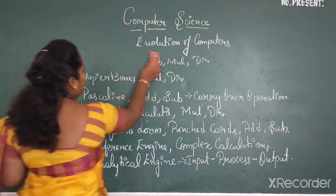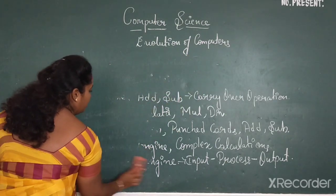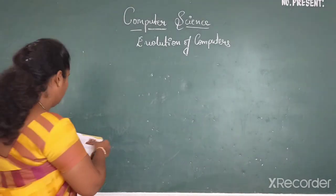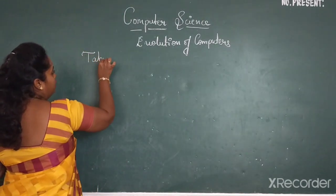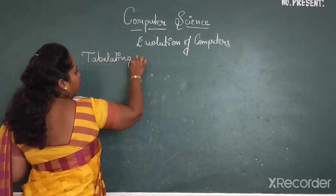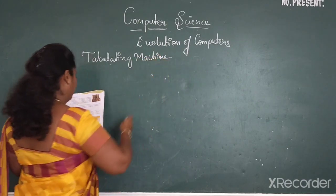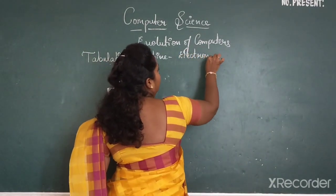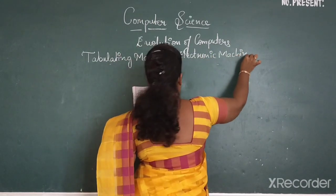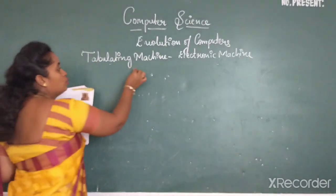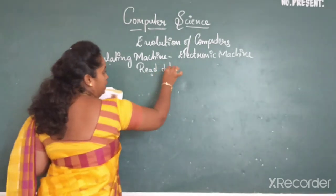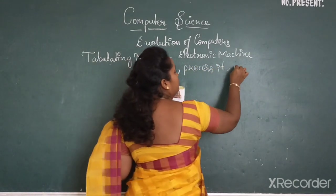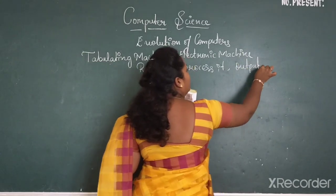Then the next one is tabulating machine. What is this tabulating machine? This was the first electronic machine, wherein it used to read the data, process it, and gives the accurate or desired output.